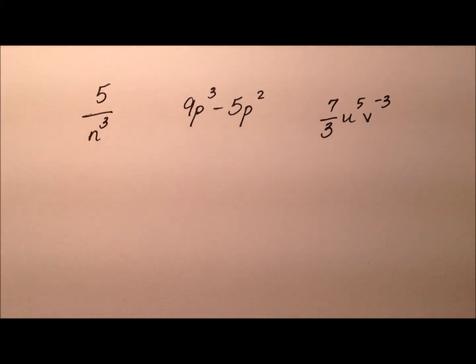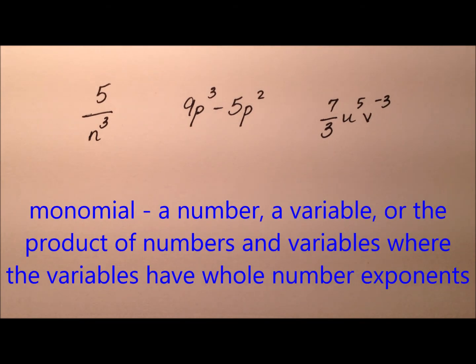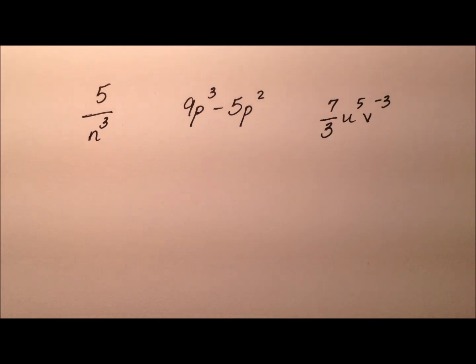So the definition of a monomial is a number, a variable, or the product of numbers and variables where the variables have whole number exponents. And remember, whole numbers are 0, 1, 2, 3, 4, and so on.